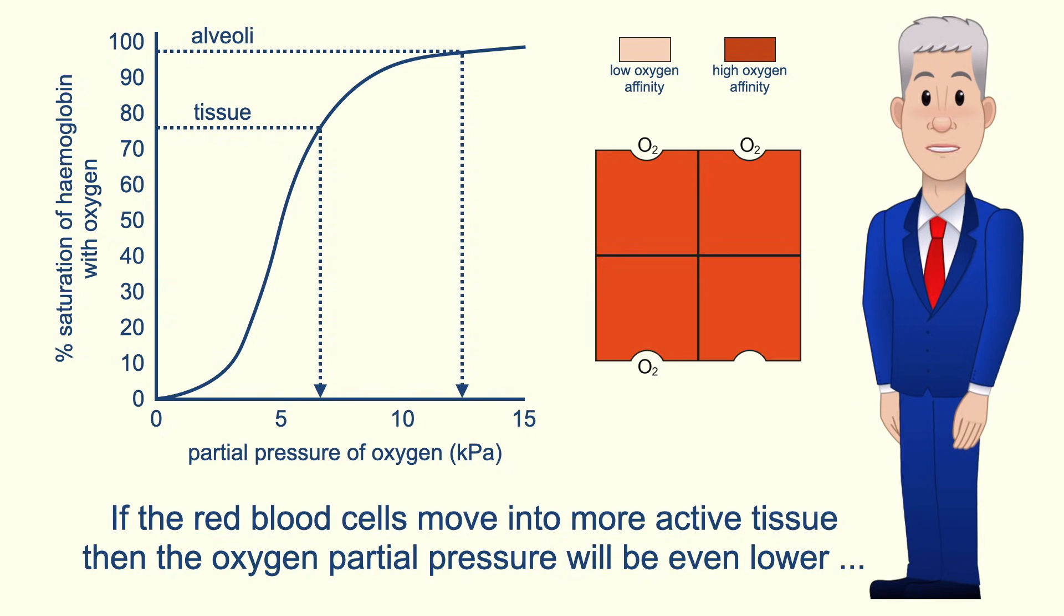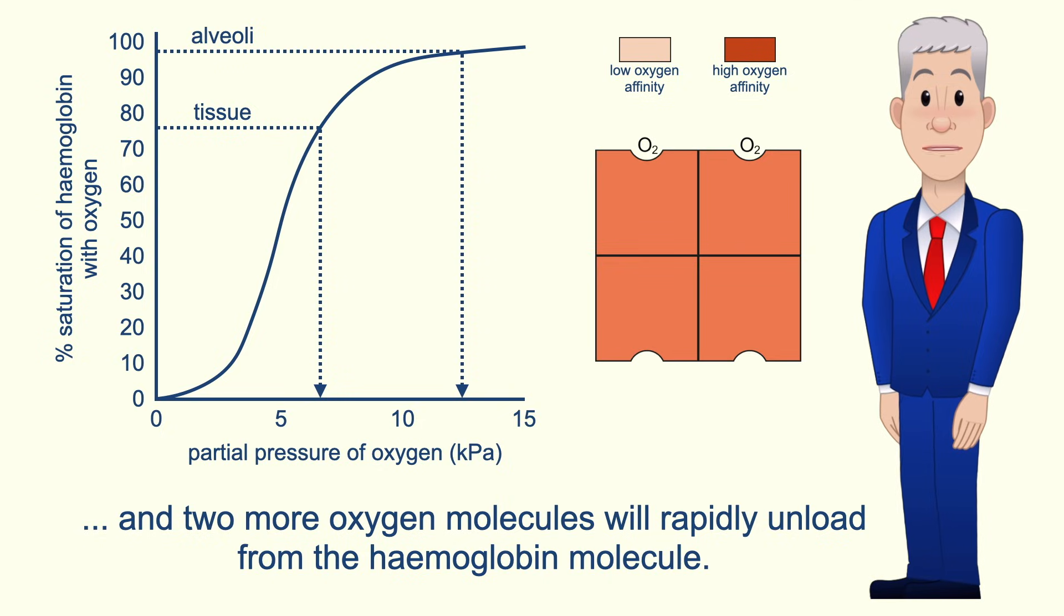If the red blood cells move into more active tissue then the oxygen partial pressure will be even lower and two more oxygen molecules will rapidly unload from the haemoglobin molecule.